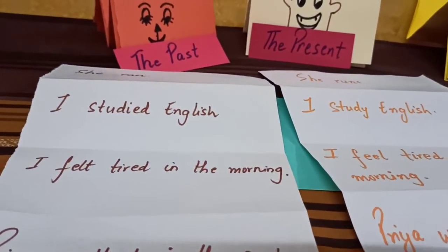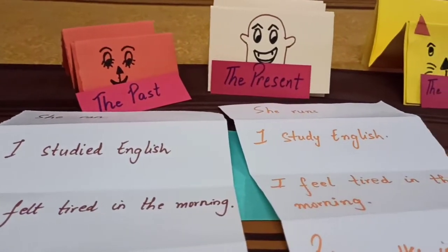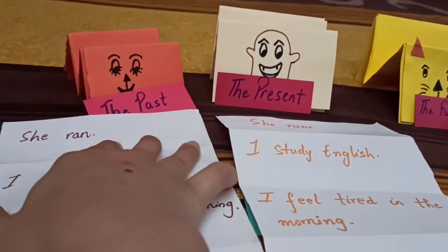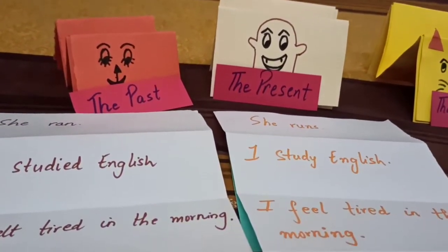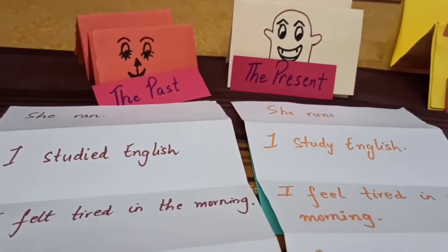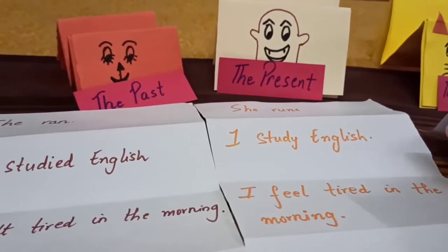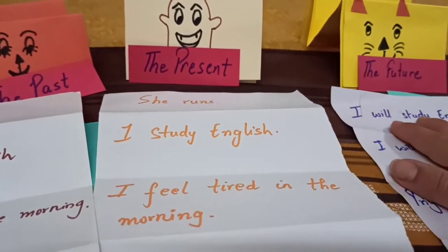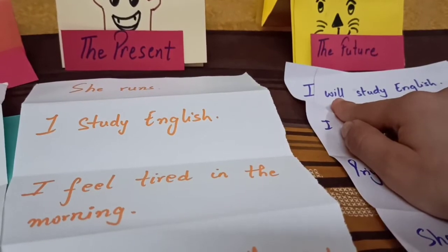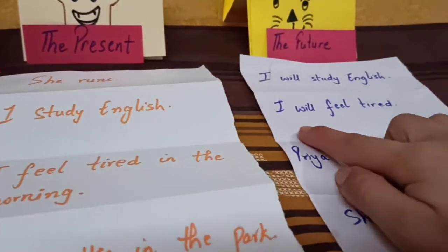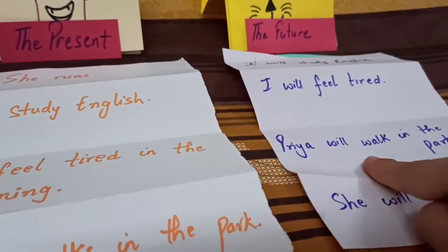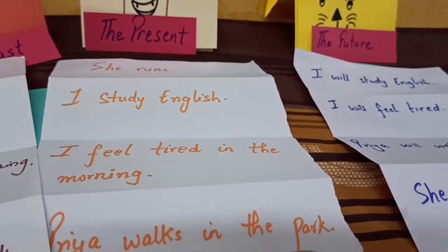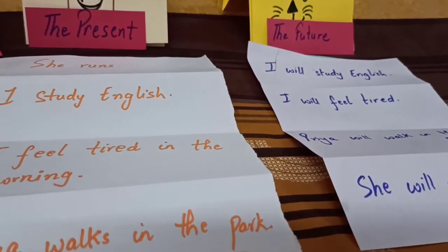After listening to the present and the past, our third character says: okay, you both are boasting about yourself and you have forgotten about me. I am the main character here. I will tell you what is going to happen in the future. He says: I will use the first form of the verb with 'will'. For example: I will study English. I will feel tired. Priya will walk in the park. She will run. So under the future tense, we use the first form of the verb and the helping verb 'will'.